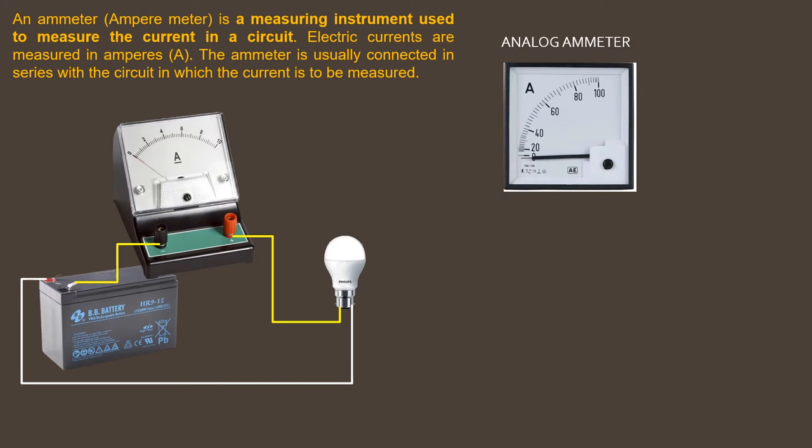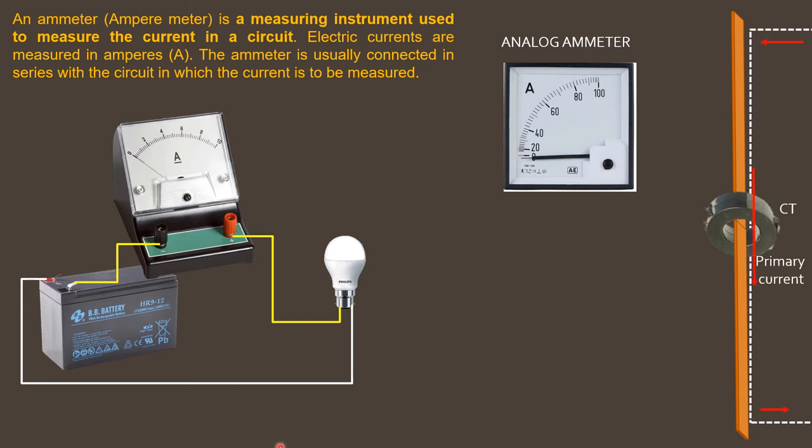But when we measure high current of any circuit and at high working voltage, it is impossible to measure such current directly. Then we use current transformer CT, which steps down high current to a suitable measurable current, and handling of such current is also easy.